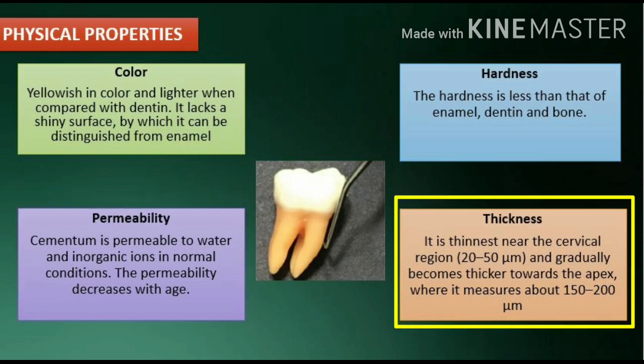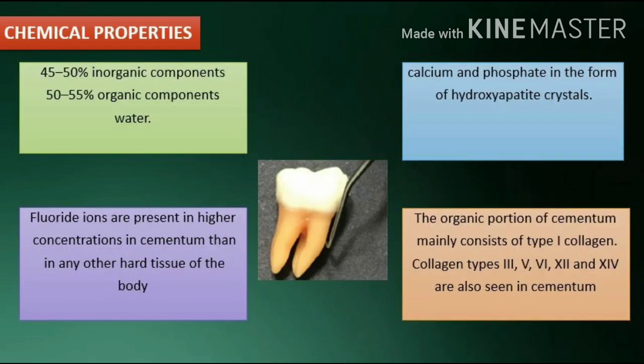Thickness: Cementum varies in thickness. It is thinnest near the cervical region, 20–50 µm, and gradually becomes thicker towards the apex, where it measures about 150–200 µm.